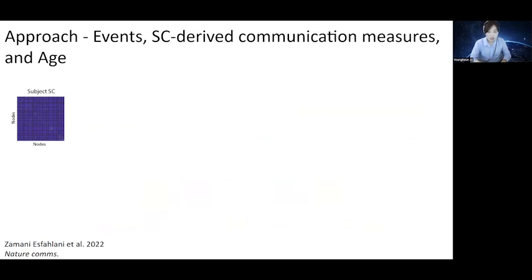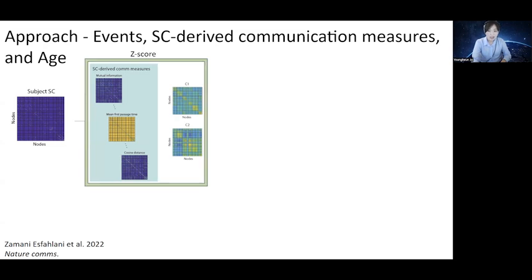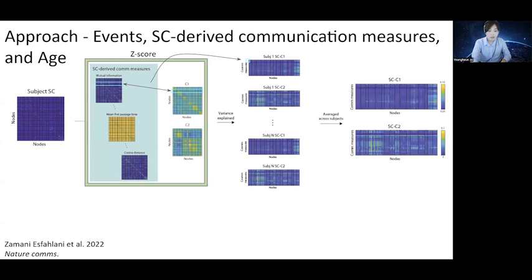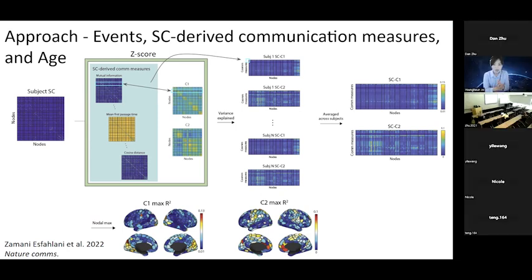Using a subject's SC matrix, we calculated 34 different SC-derived communication matrices as in the 2022 paper. With functional data, we calculated a subject's C1 and C2 matrices. We then z-scored each matrix respectively and calculated the variance explained by each measure per subject. We could then average the variance explained across all subjects to create a representative relationship matrix between SC-derived communication measures with C1 and C2. Because we like brain plots, we also plotted the maximum variance explained for each node. Just by visual inspection, we could see that C1 and C2 correspond to SC-derived communication measures differently in the human brain.